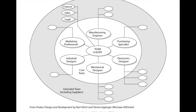Looking at how the design team is structured, we have a core team and an extended team. The core team consists of a team leader, a mechanical designer or mechanical engineer, an industrial designer, marketing professionals for surveys, and manufacturing engineers to identify what parts are needed — what to buy and what to build — along with a purchasing specialist.